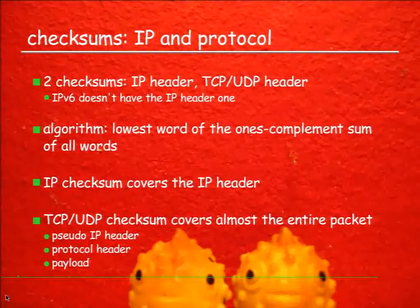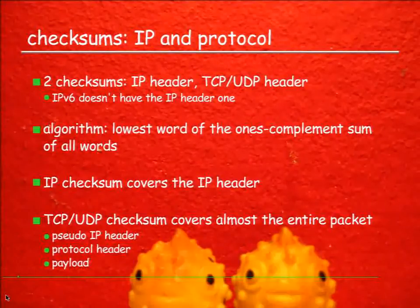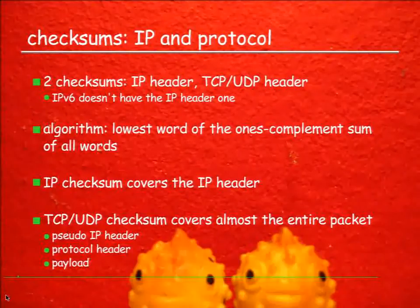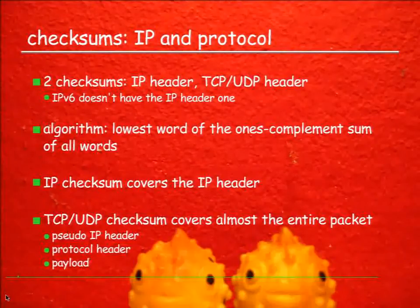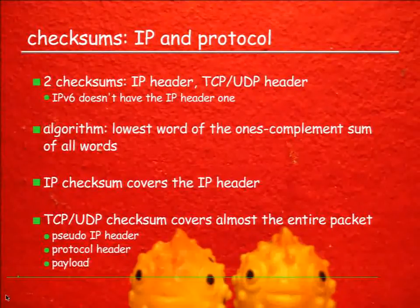I want to talk about the TCP/IP checksums. We're mostly talking about two sets of checksums here. One's the IP checksum, and the other is the so-called protocol checksum, which is mostly TCP and UDP. IPv6 does not have the IP header checksum - I'll explain later why that doesn't make a difference at all. The actual checksum algorithm is really simple: it's the lowest word of the ones-complement sum of all the words in either the IP header or almost the entire packet.